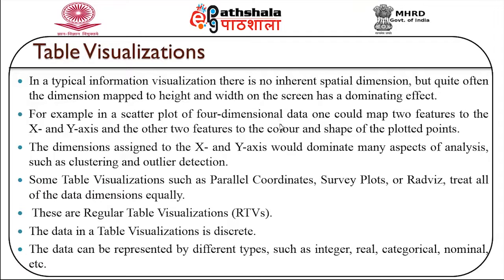For example, in a scatter plot of four-dimensional data, one could map two features to the x and y axis and the other two features to the colour and shape of the plotted points. The dimensions assigned to the x and y axis would dominate many aspects of analysis such as clustering and outlier detection.